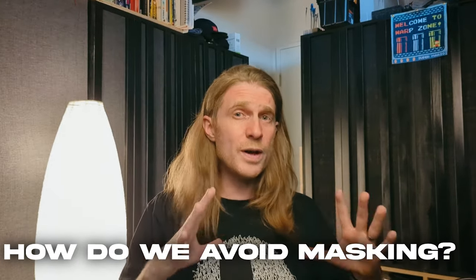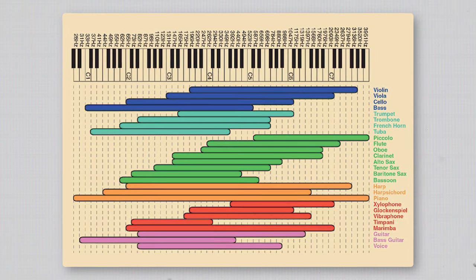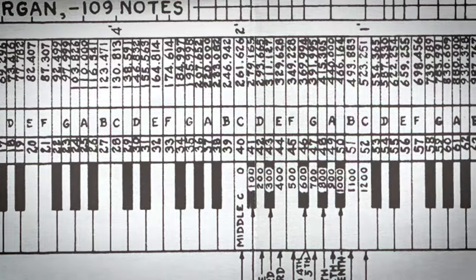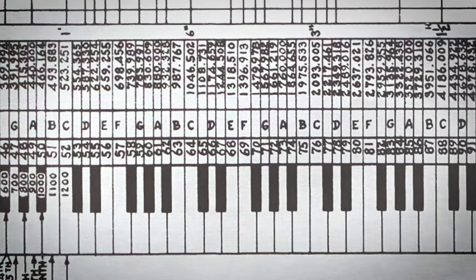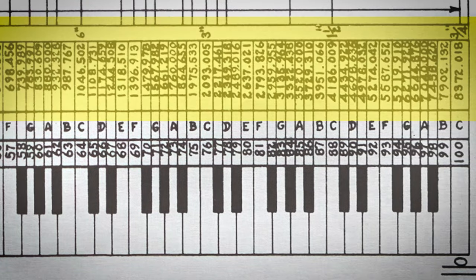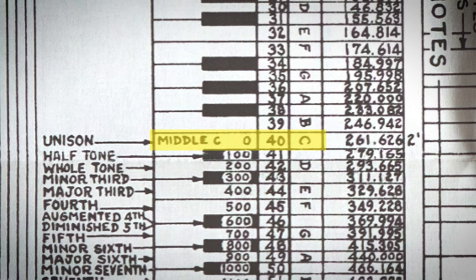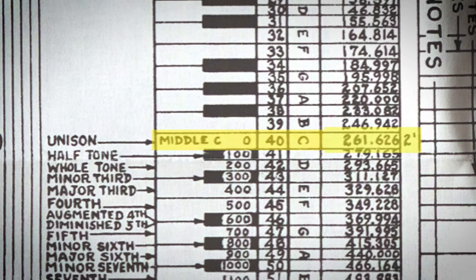So how do we avoid masking? The easiest way is to plan out where everything is going to fit in the frequency spectrum. The most straightforward approach is to make sure that the fundamental note playing for each instrument at any given time is different. All the notes in the classic American scale correspond to frequencies in the spectrum — for example, every time you hit a middle C, it should appear as 262 hertz or thereabouts, depending on your tuning.